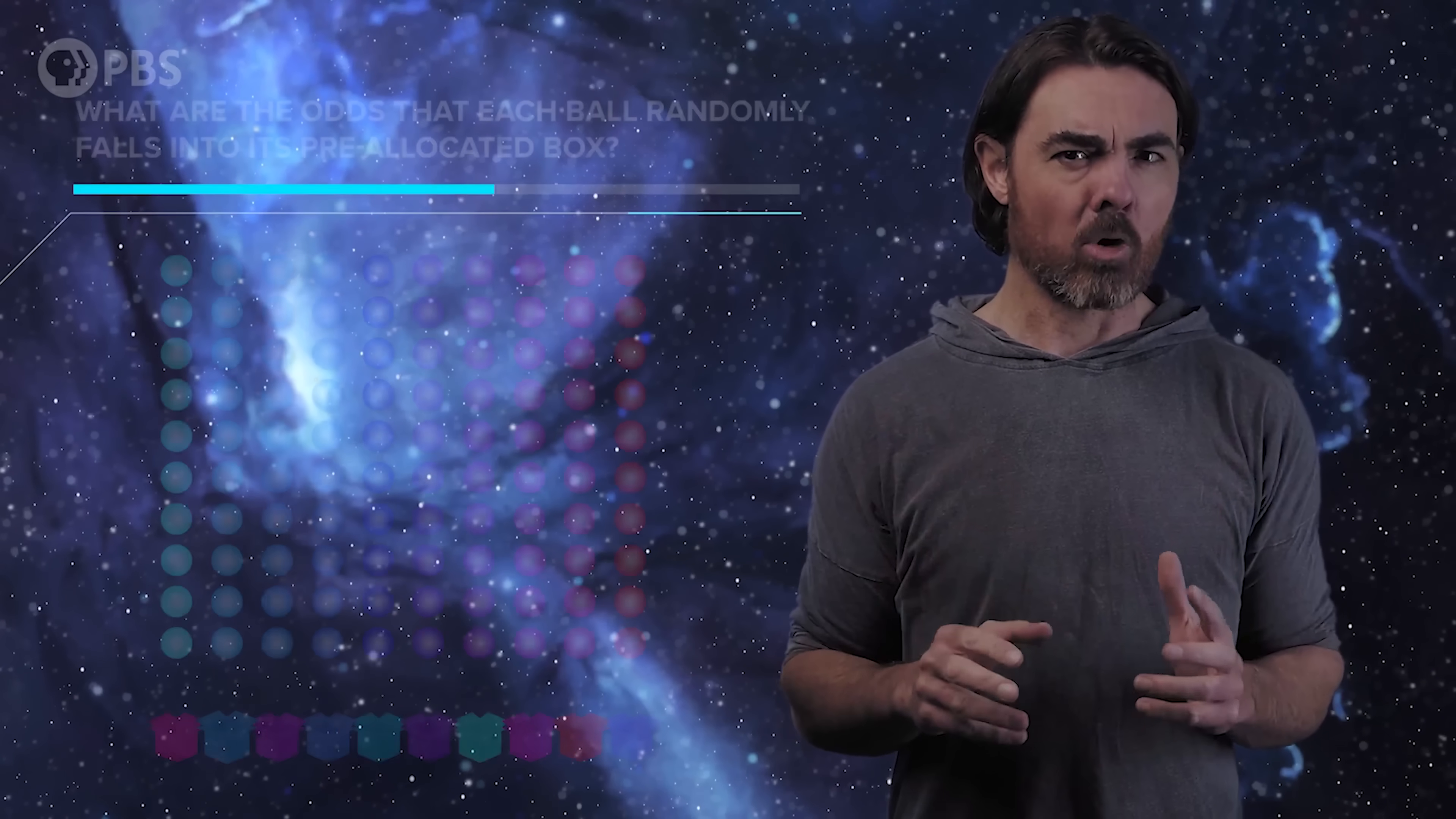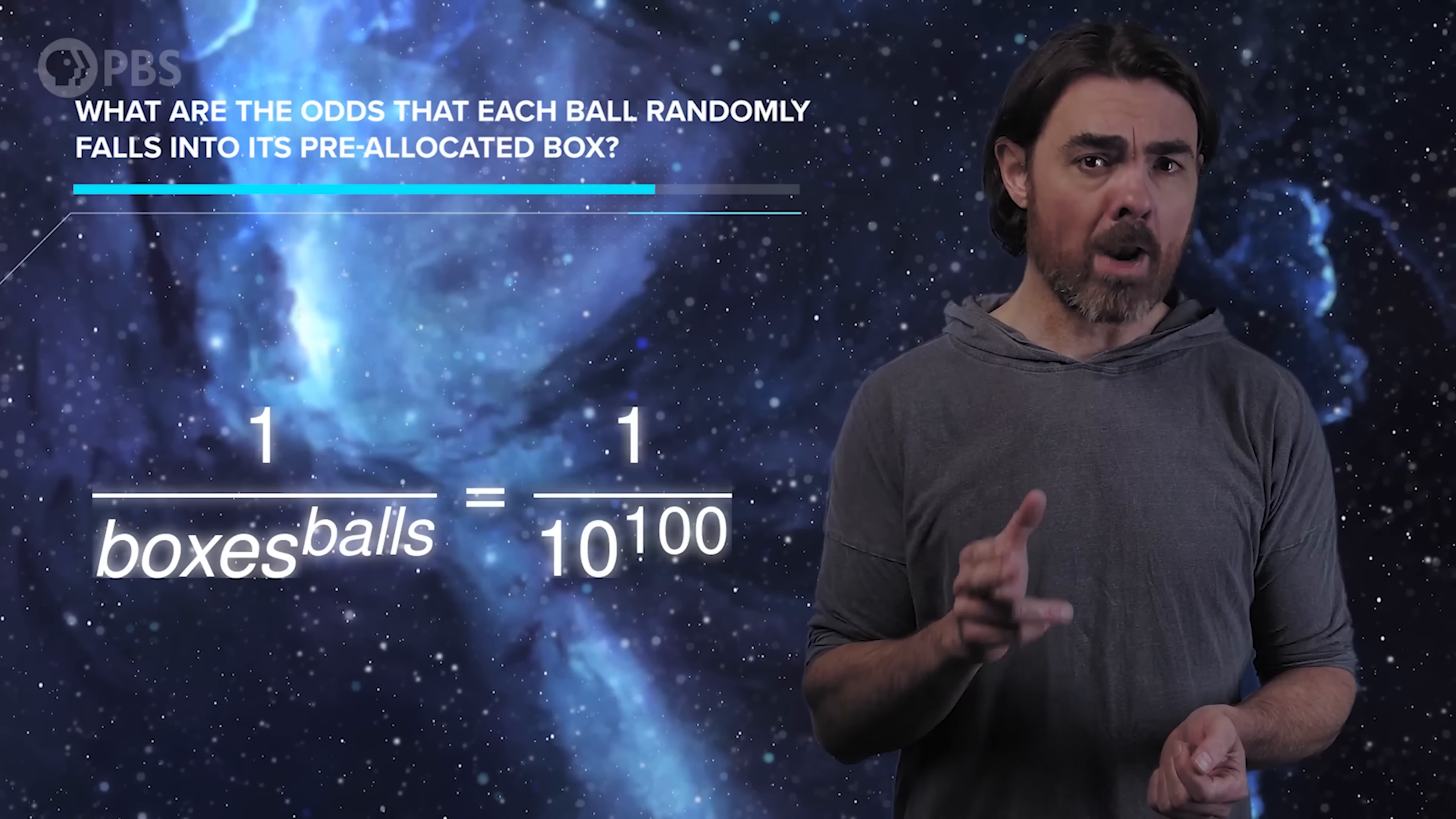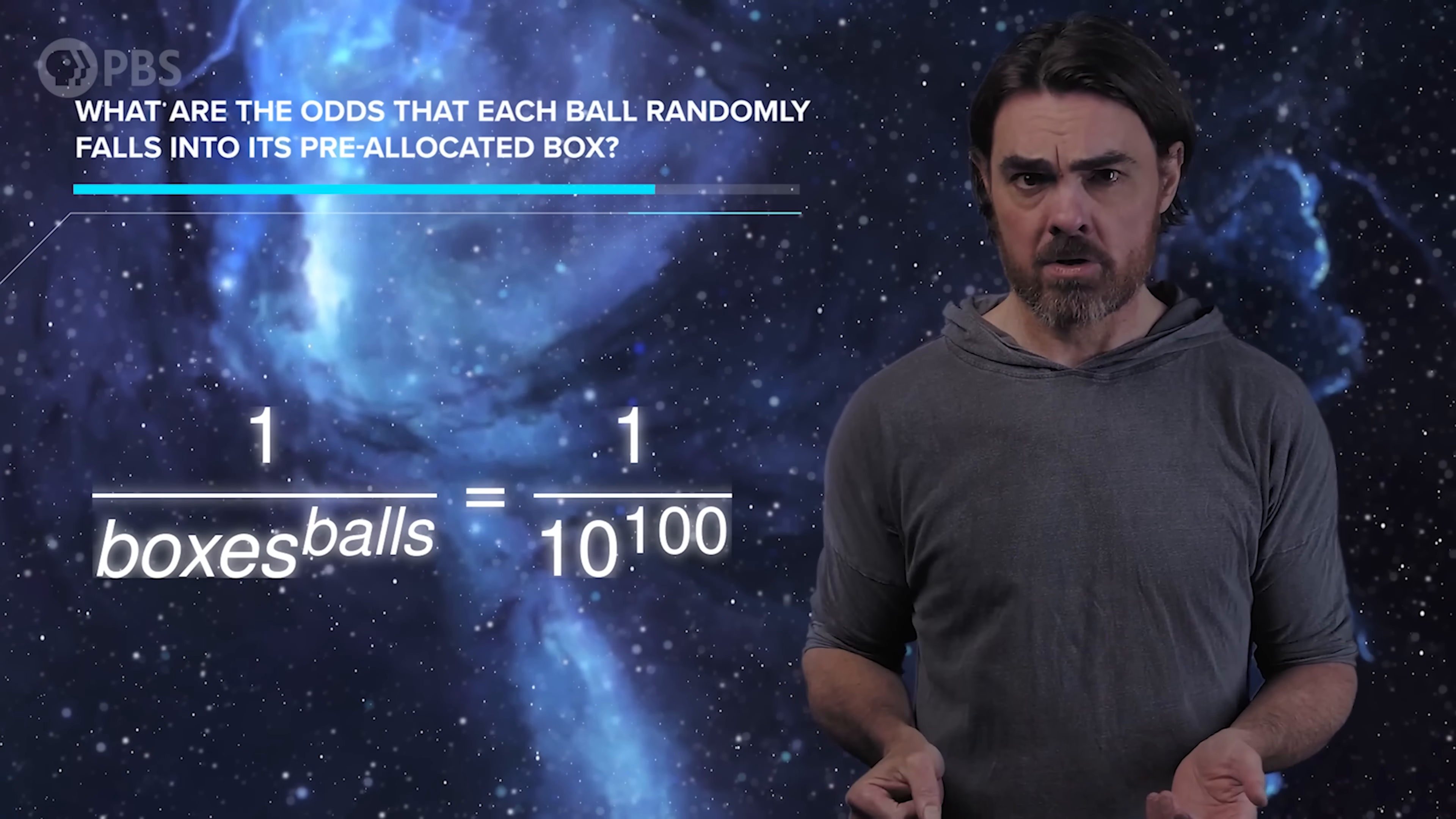But what if we label each ball and specify that each ball belongs to a specific box? Now the chance of every single ball randomly falling into its pre-allocated box is just as small as all the balls falling into the same box. Both have a probability of 1 over the number of boxes to the power of the number of balls, 1 over 10 to the power of 100, which is a probability so small that if you randomize the balls once every second, the Milky Way supermassive black hole will have evaporated before you get the balls in their right boxes.